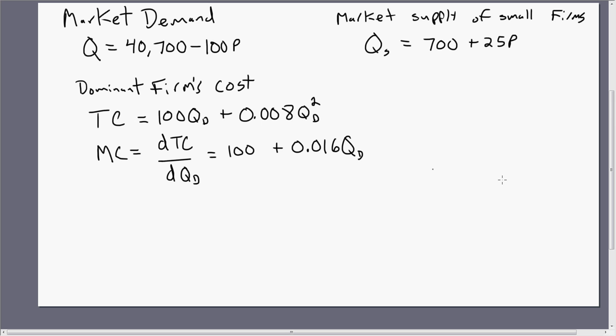In this price leadership model, we're going to have a dominant firm that is setting the industry price, and we're going to have a bunch of smaller firms taking that price as a given.